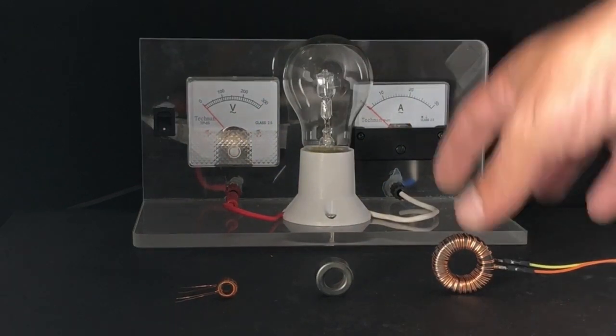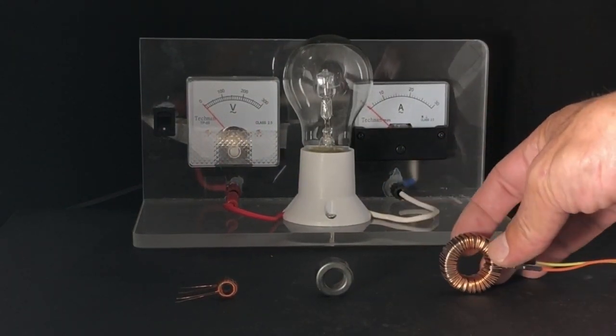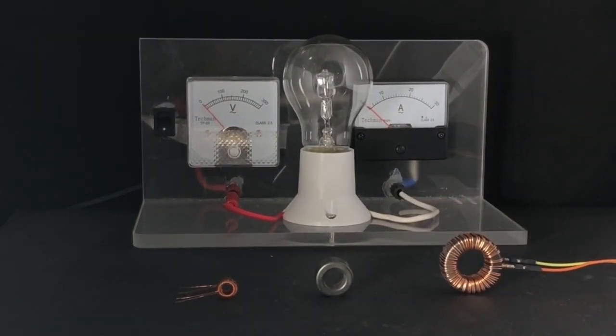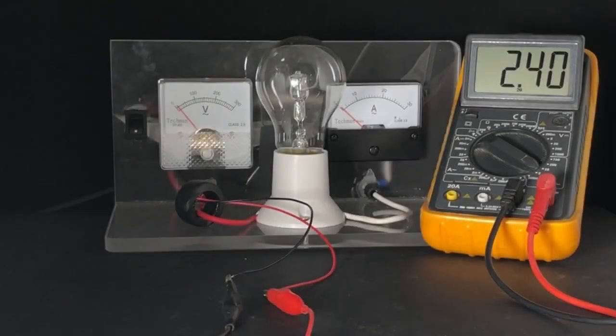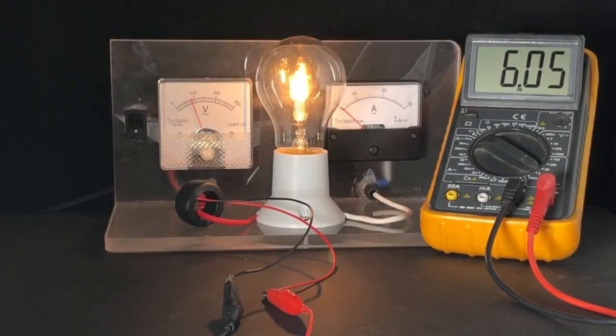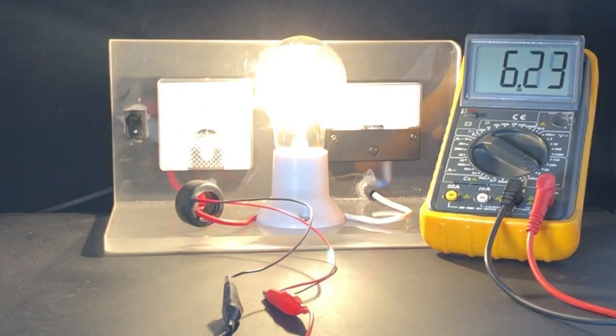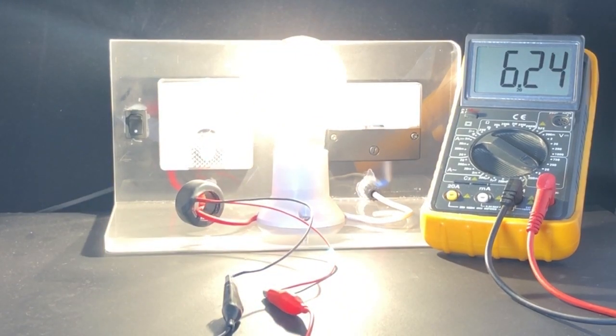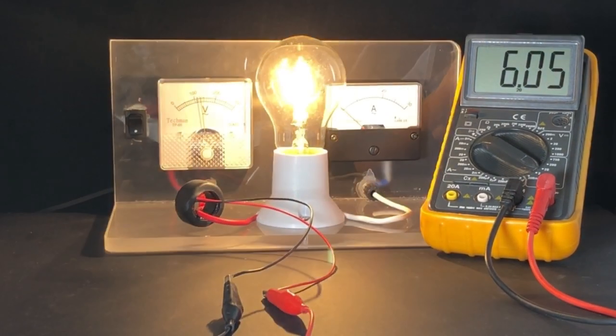Similares a la anterior son las bobinas toroidales, que se construyen enrollando un conductor en torno a un toroide o rosquilla y que logran captar parte de la electricidad que circula por un conductor por el mismo principio de la bobina Rogowski, pero que requieren cortarlo para poder pasarlo por la bobina.